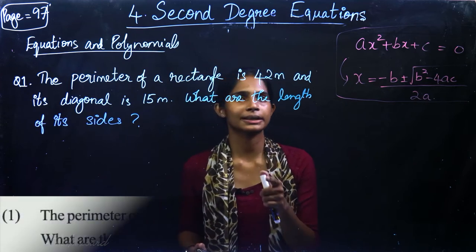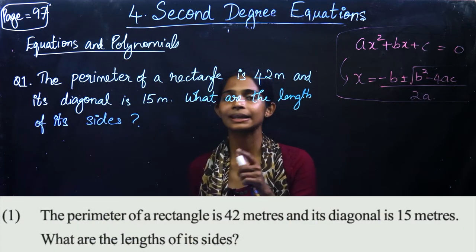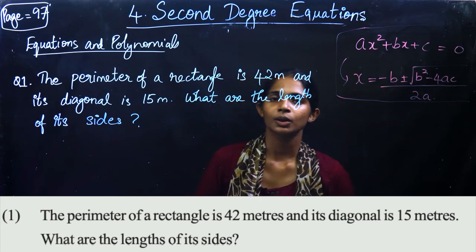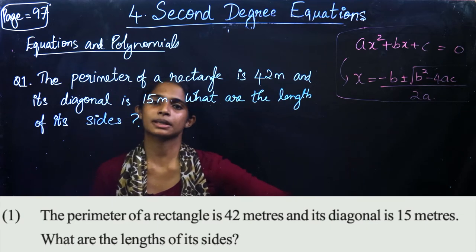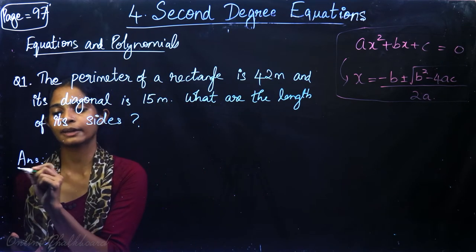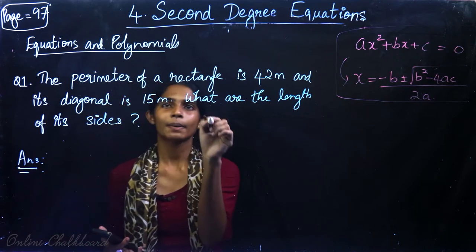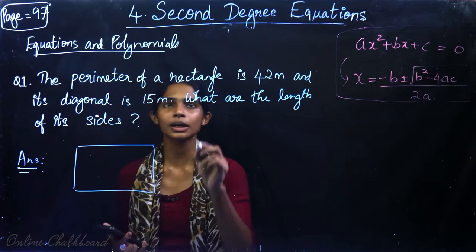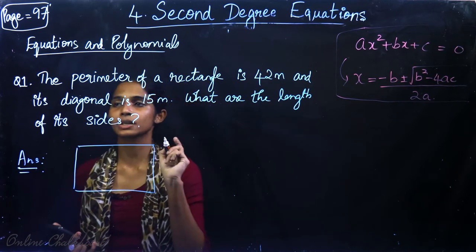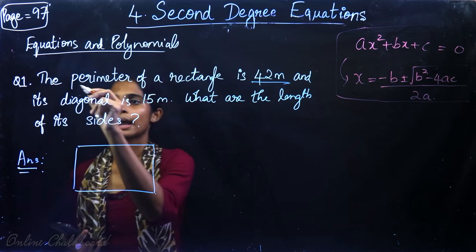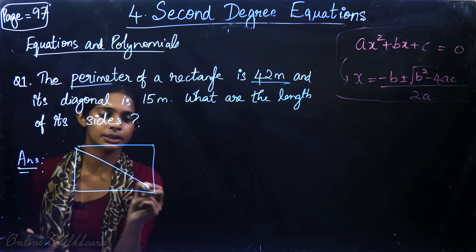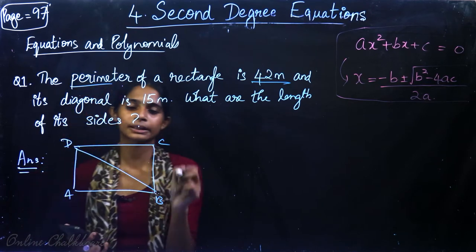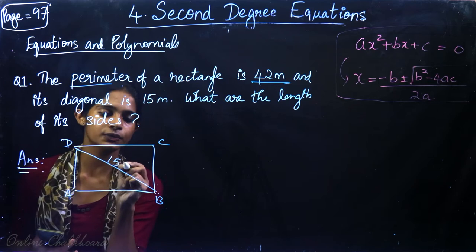The perimeter of a rectangle is 42 meters and its diagonal is 15 meters. What are the lengths of its sides? Let's start a rough rectangle. I call the rectangle ABCD. BD is a diagonal. Diagonal is 15 meters. I need to find the length of the sides.